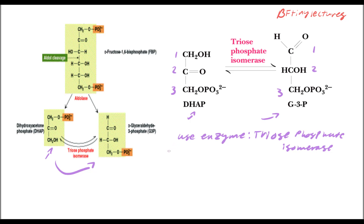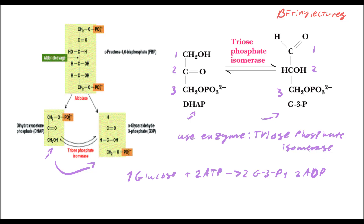To recap the investment phase: we used one glucose and two ATP, and from those we created two G3Ps and two ADPs. We also used up two phosphate groups for the phosphorylation reactions. Now we have two glyceraldehyde-3-phosphate molecules, and we're going to begin the dividend reactions.